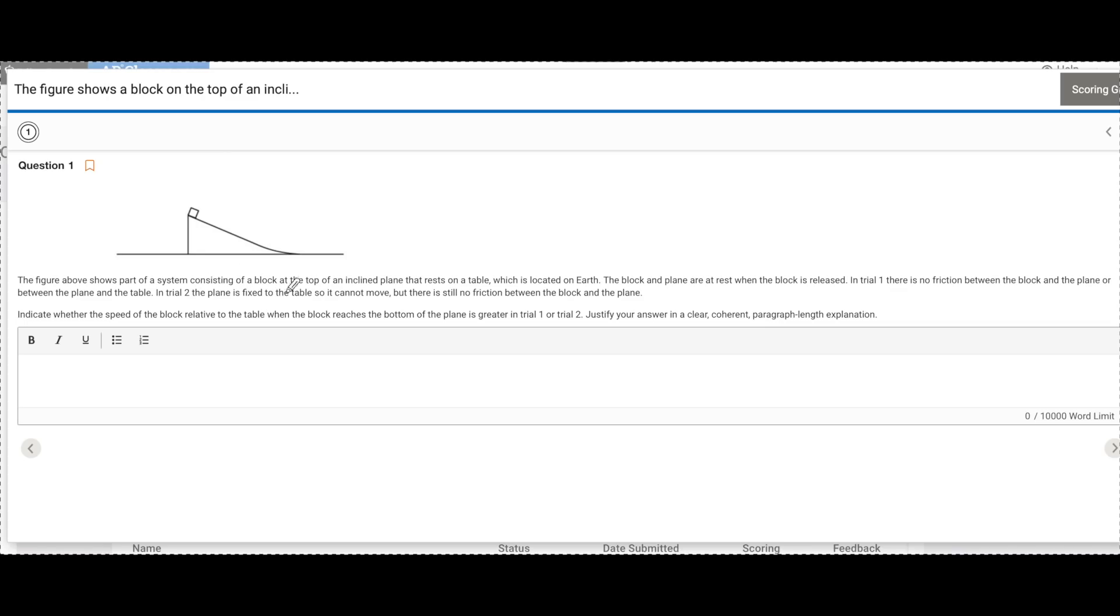The figure above shows a system consisting of a block, an incline, and earth. This end earth is actually really important because it's going to tell me something in just a minute. So I have the block, I have an inclined plane, and I have earth. So there's really three things inside this system.